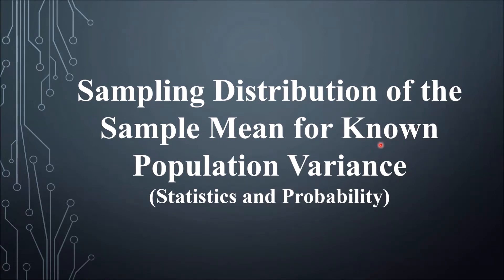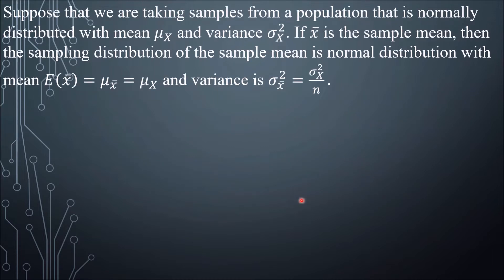Sampling Distribution of the Sample Mean for Known Population Variance. Suppose that you are taking samples from a population that is normally distributed with mean mu of x and variance. If x-bar is the sample mean, then the sampling distribution of the sample mean is a normal distribution with mean the same as the population mean, and variance equal to the population variance divided by n.